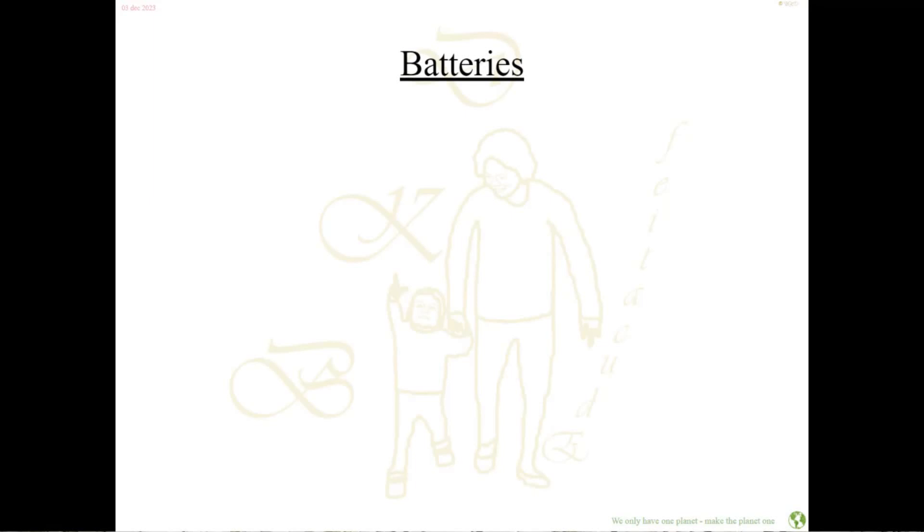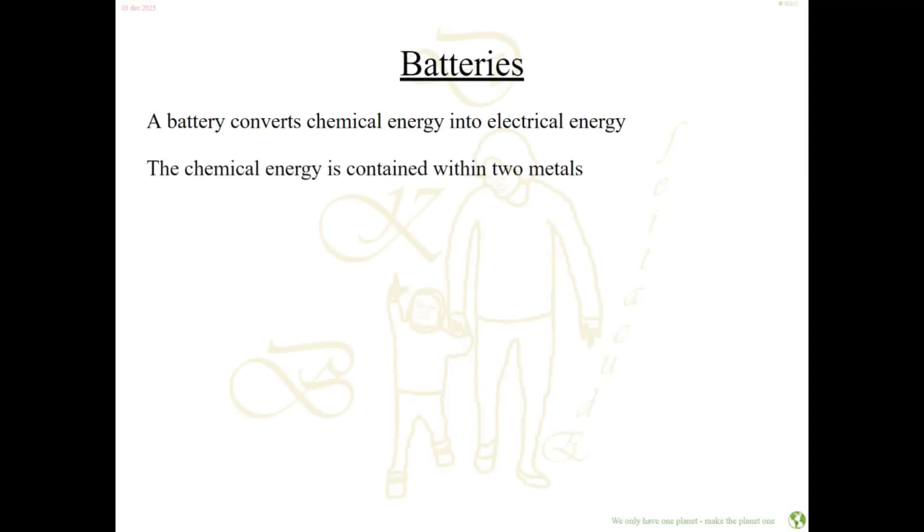Batteries are used in many household appliances nowadays. But what is a battery? A battery functions by converting chemical energy into electrical energy, and the chemical energy is stored in two metals.